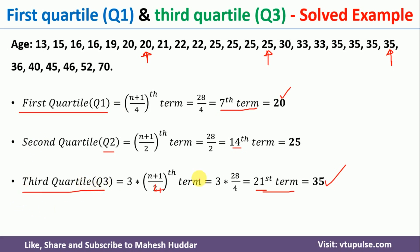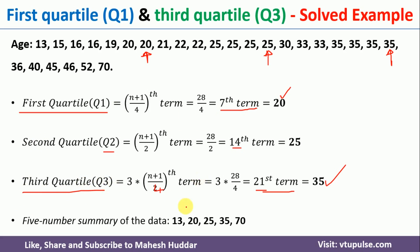Once you find the first, second, and third quartile, we can summarize this particular data with a 5-element summary: the minimum element, Q1, Q2, Q3, and the maximum element. This is the minimum number, first quartile value, second quartile value, third quartile value, and the maximum value of the data.